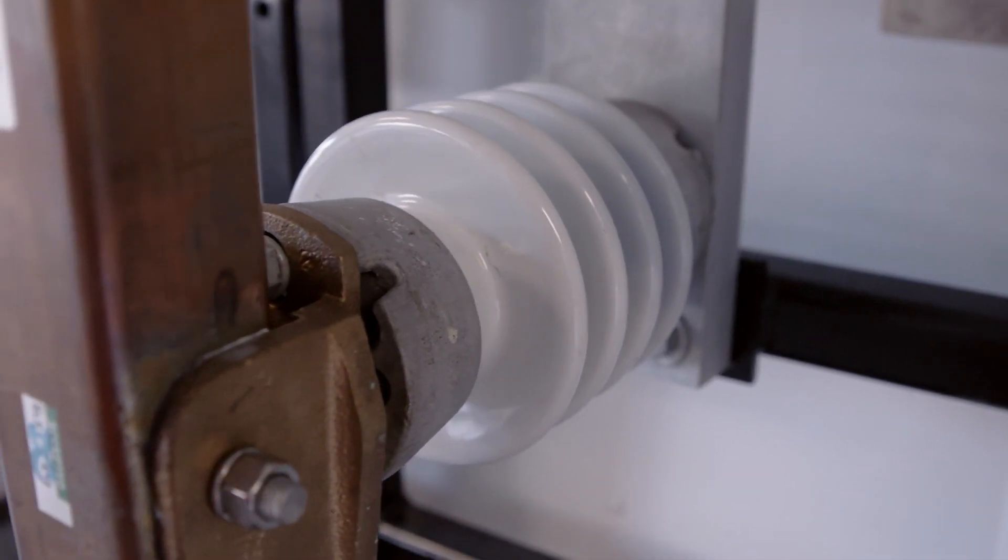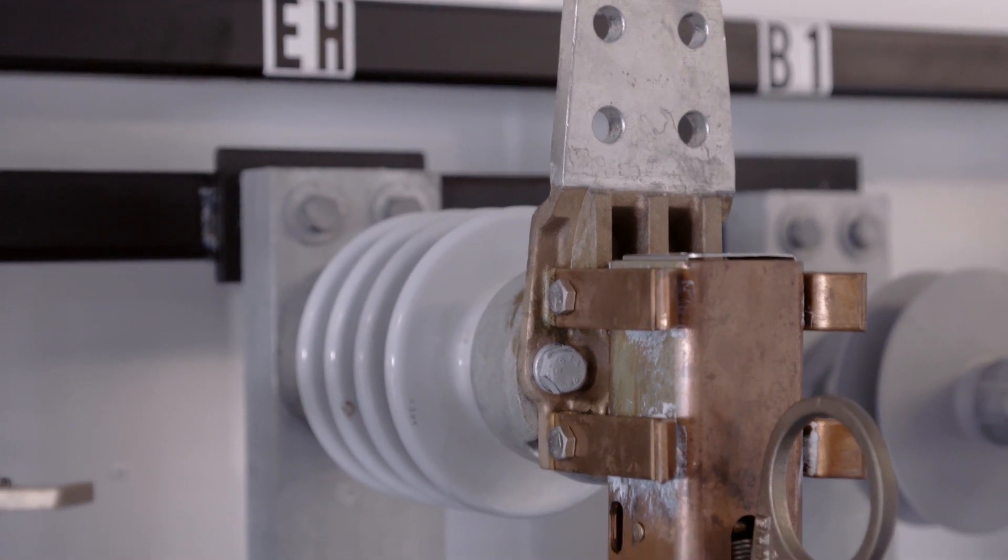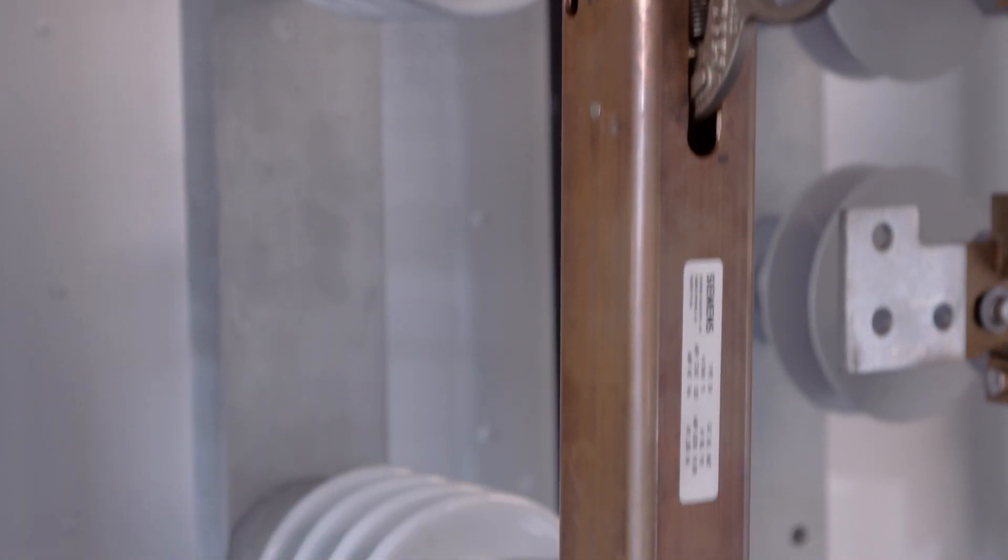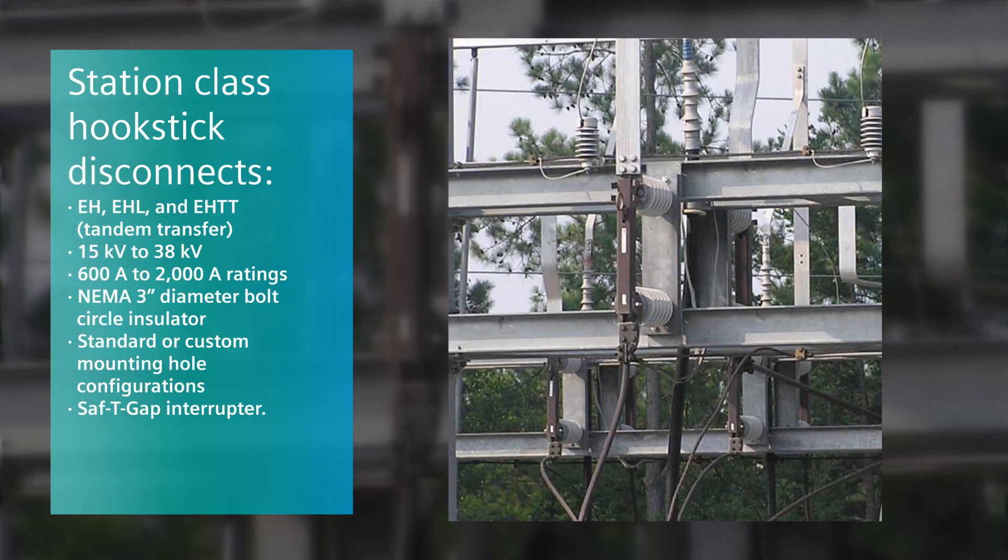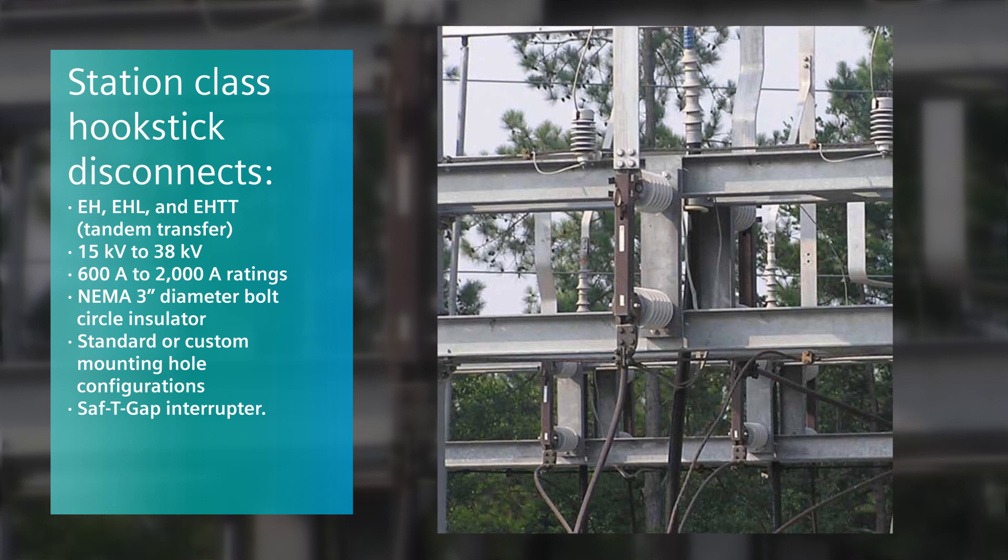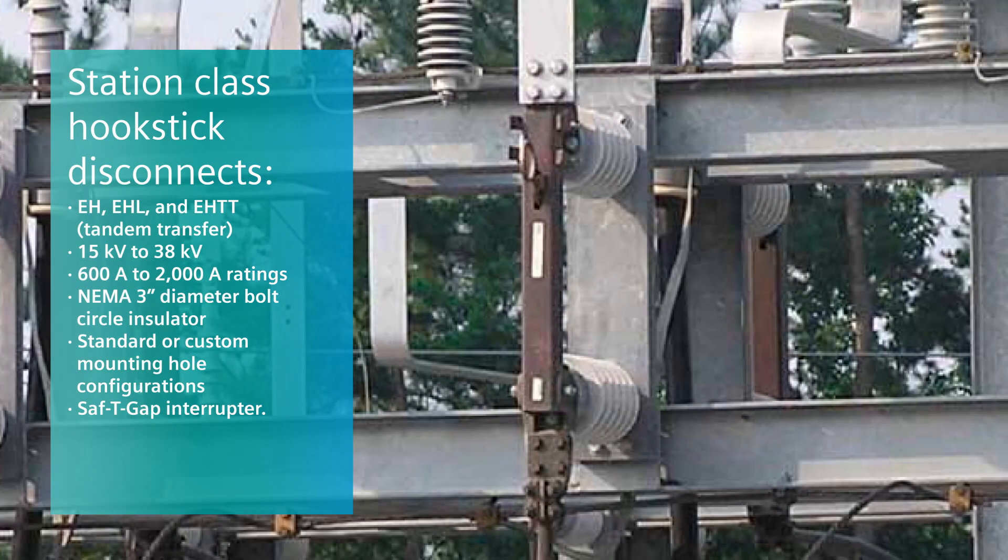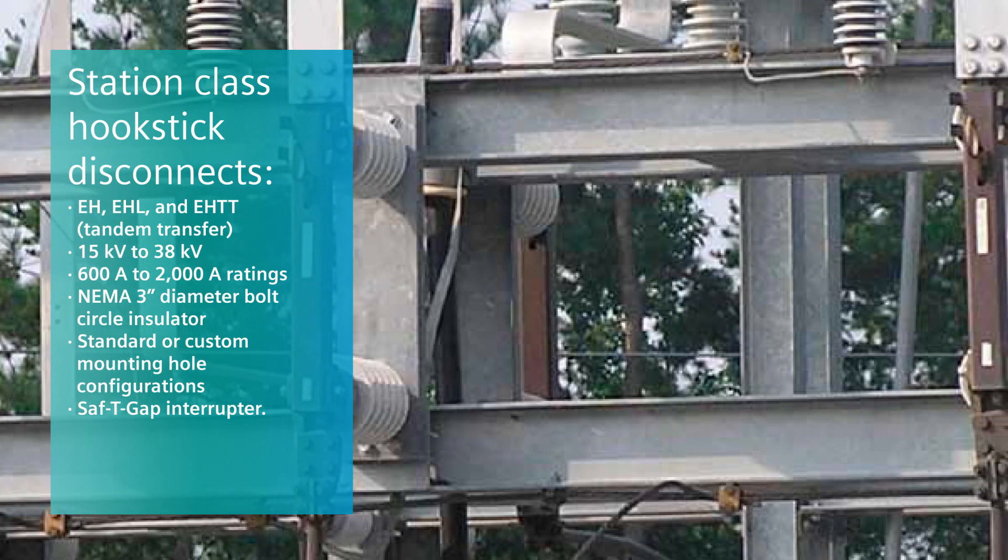Siemens also offers a variety of single phase air brake switches. All utilize a square tubular copper blade and can have porcelain or polymer insulators. Station class hook stick disconnects are produced in three types, offered in 15kV to 38kV, 600 to 2000 amp ratings and have NEMA 3 inch diameter bolt circle insulators.